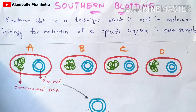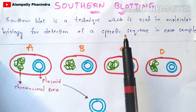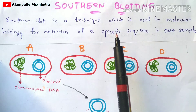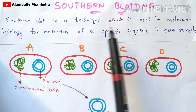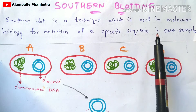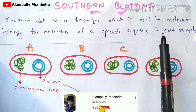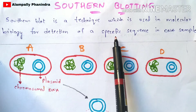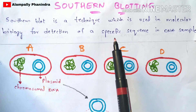In this video we are going to discuss about Southern blotting. In previous videos I have explained Western blotting, and the link will be given in the description box. Northern blotting will also be explained in further videos. Southern blot is a technique used in molecular biology for detection of a specific sequence in a DNA sample.